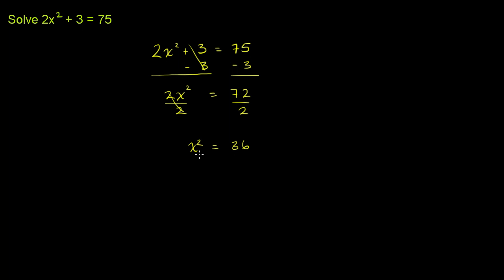And then to solve for x, we can take the plus or minus square root of both sides. So we could say the plus or, let me write it this way. If we take the square root of both sides, we would get x is equal to the plus or minus square root of 36, which is equal to plus or minus 6. Let me just write that on another line. So x is equal to plus or minus 6.